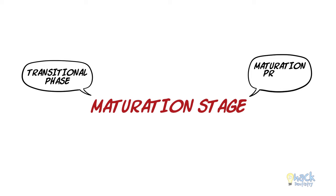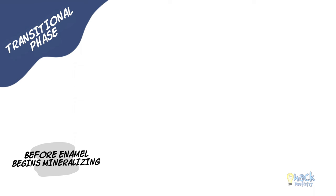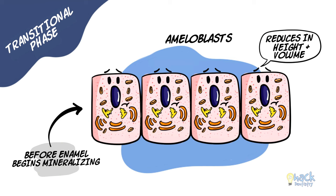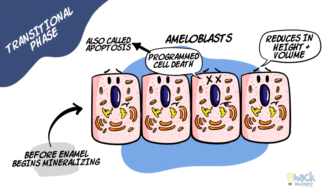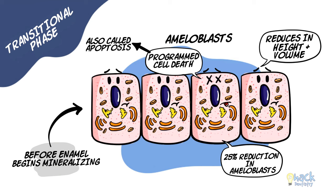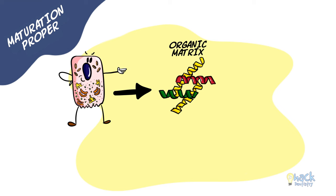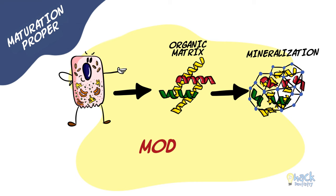The maturation phase of amelogenesis consists of a transitional phase and a maturation proper phase. Before the enamel matrix can mineralize and mature, there is a brief transitional phase where ameloblasts reduce in height and volume. Ameloblasts also undergo programmed cell death or apoptosis, and there is approximately a 25% reduction in the number of ameloblasts in this phase. The maturation phase is when the bulk of the proteins and water in the organic matrix are removed and replaced by inorganic material. This is accomplished by a process called modulation.